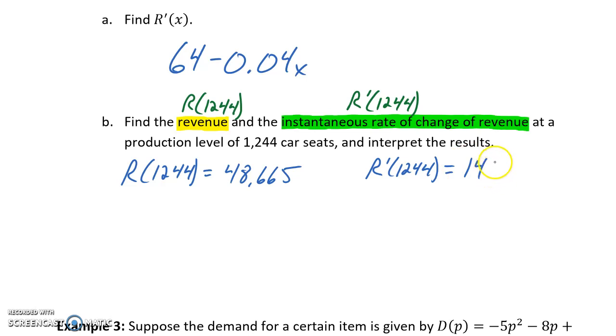So since we ended up with a positive result, because our marginal revenue is something greater than 0, we know that our function value is increasing.